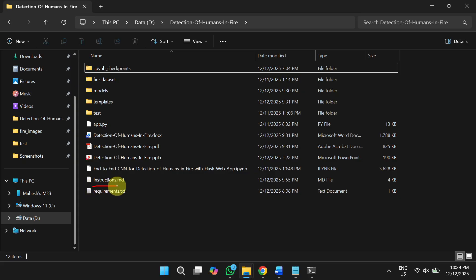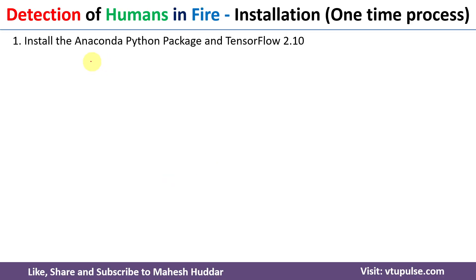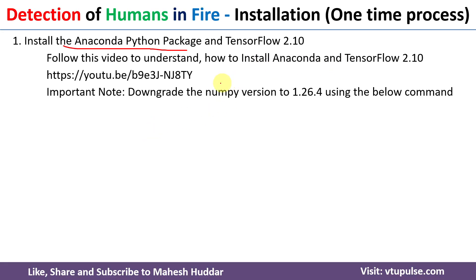The next file is the instruction file, which contains steps to install the necessary software and libraries and how to run the project. These steps are a one-time process. First, we need to install the Anaconda Python package and TensorFlow 2.10. You can follow the linked video to understand how to install Anaconda and TensorFlow. Once Anaconda is downloaded, you need to downgrade the NumPy version to 1.26.4 using the command: pip install numpy==1.26.4.